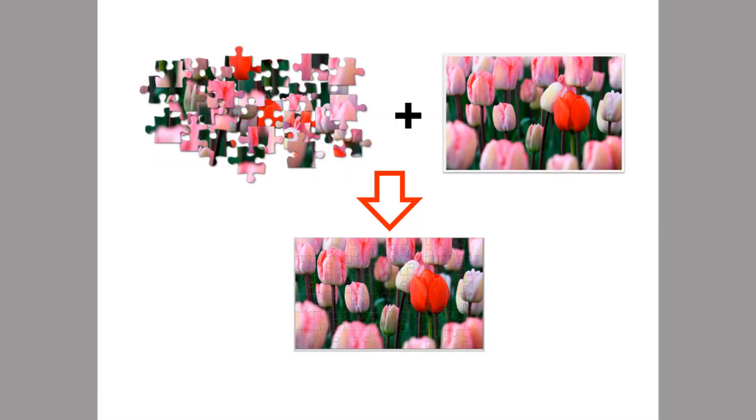Back in the first few lectures we distinguished between two different computational problems that we need to solve when analyzing sequencing data. Both of these problems arise when we want to take a collection, a large set of sequencing reads, and figure out where each of them came from.